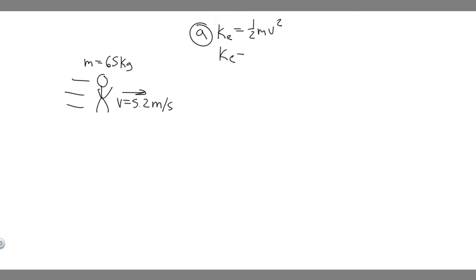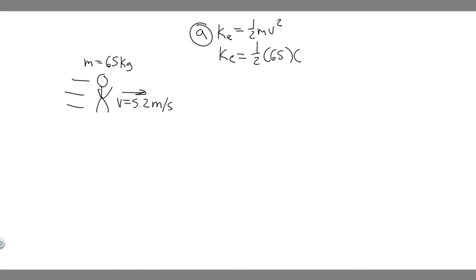The kinetic energy, if we plug it in, is going to be 0.5 times the mass. You need to make sure your mass is in kilograms and velocity is in meters per second — in this problem it is, but just make sure for others. So: 0.5 times 65, multiplied by 5.2 squared.